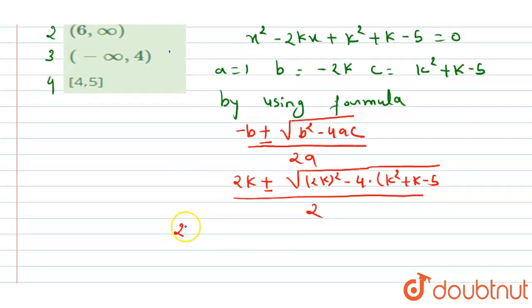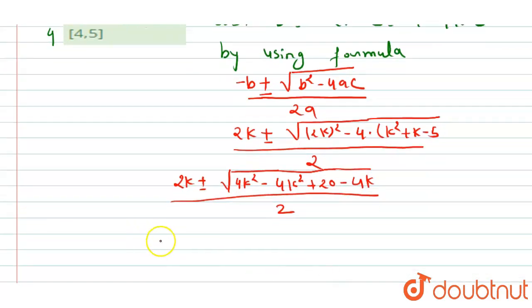We get 2k plus minus square root of 4k squared minus 4k squared minus 4k plus 20 over 2. On further solving this, what we have to get,